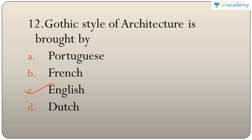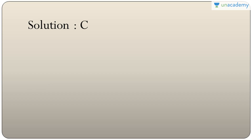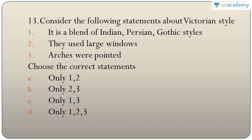Question twelve: Gothic style of architecture was brought by which colonial power? The answer is English. Question thirteen: statements about Victorian style — it is a blend of Indian, Persian, and Gothic styles, uses large windows, and arches were pointed. All three are true, so the answer is D — only one, two, and three.